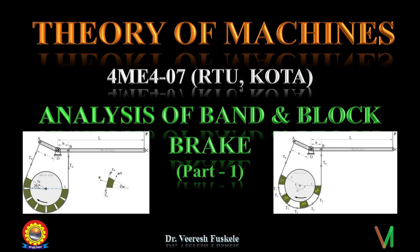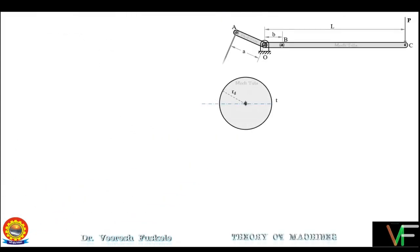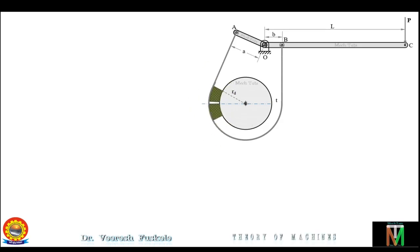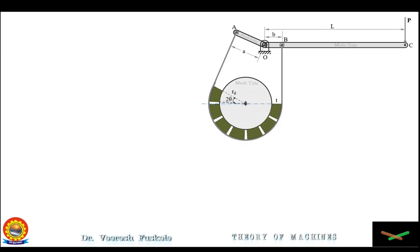Now in today's lecture we will learn about the band and block brake, which is the combination of both band brake and block brake. This is the drum, this is the lever and the band, and these are the blocks which are placed in between the band and the drum. The band and block brake basically consists of a number of wooden blocks secured inside a flexible steel band.